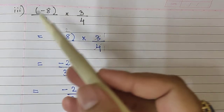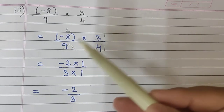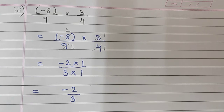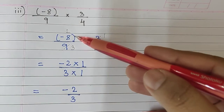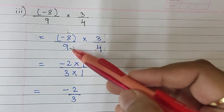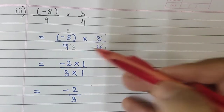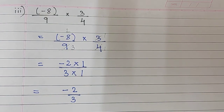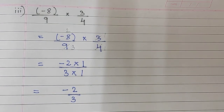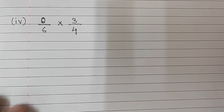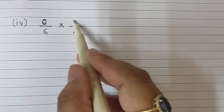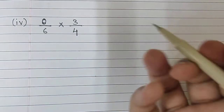We must always check if anything can be cancelled. You can only cancel a numerator with a denominator — it has to be up and down. For example, if 8 is here and 4 is here side by side, we cannot cancel them like that. Moving to the next sum — here also there is cancellation possible: 3 ones are 3, 3 twos are 6.